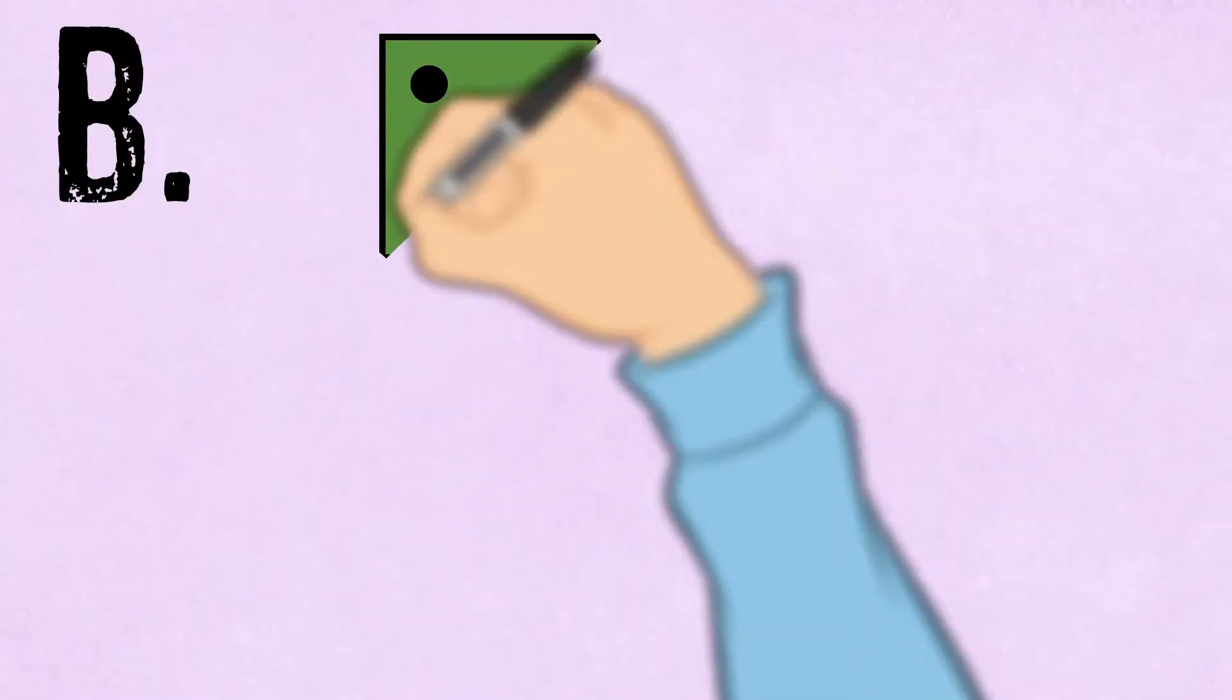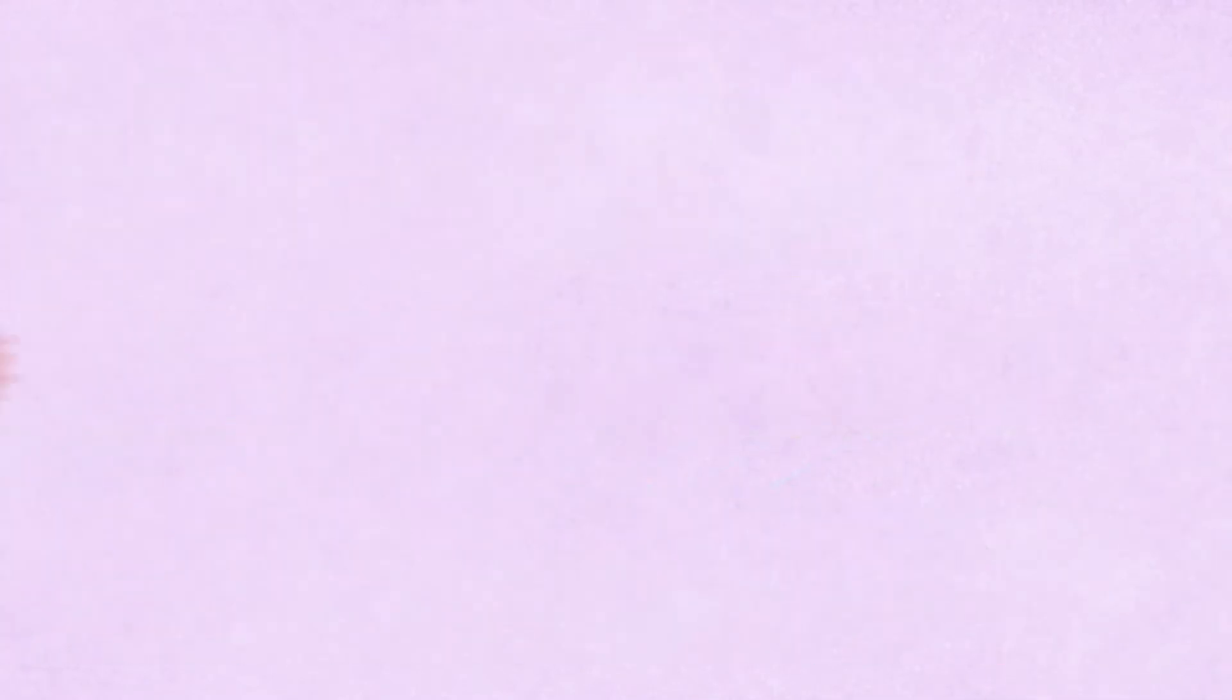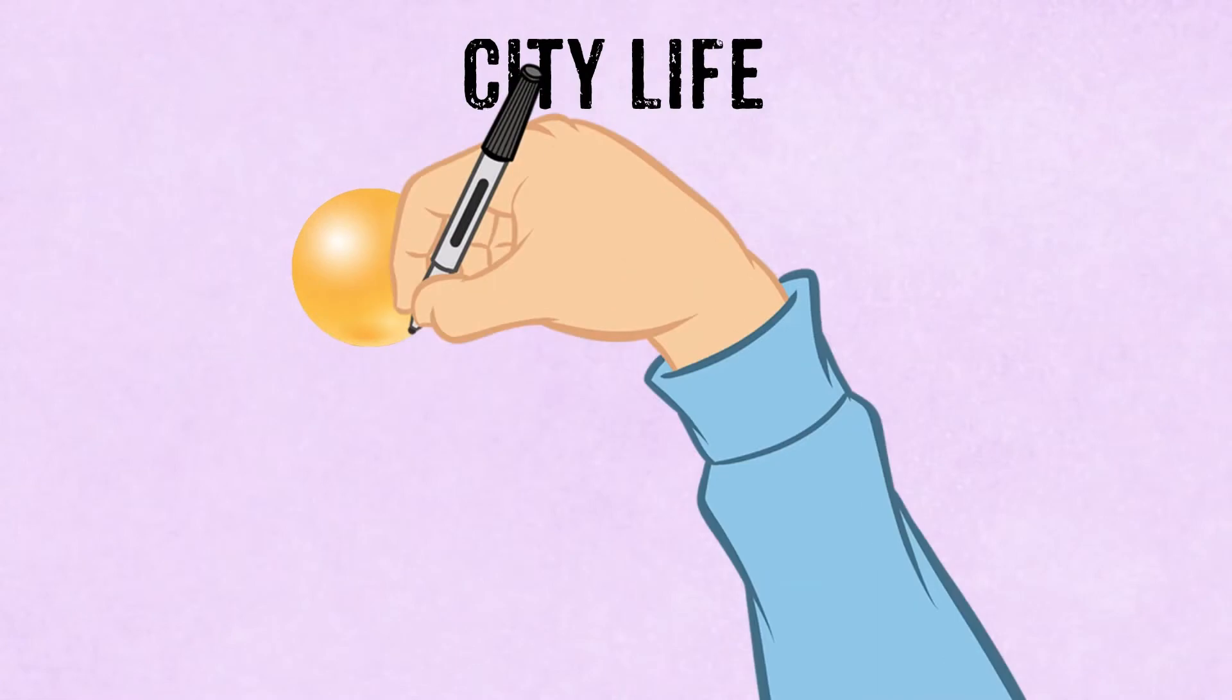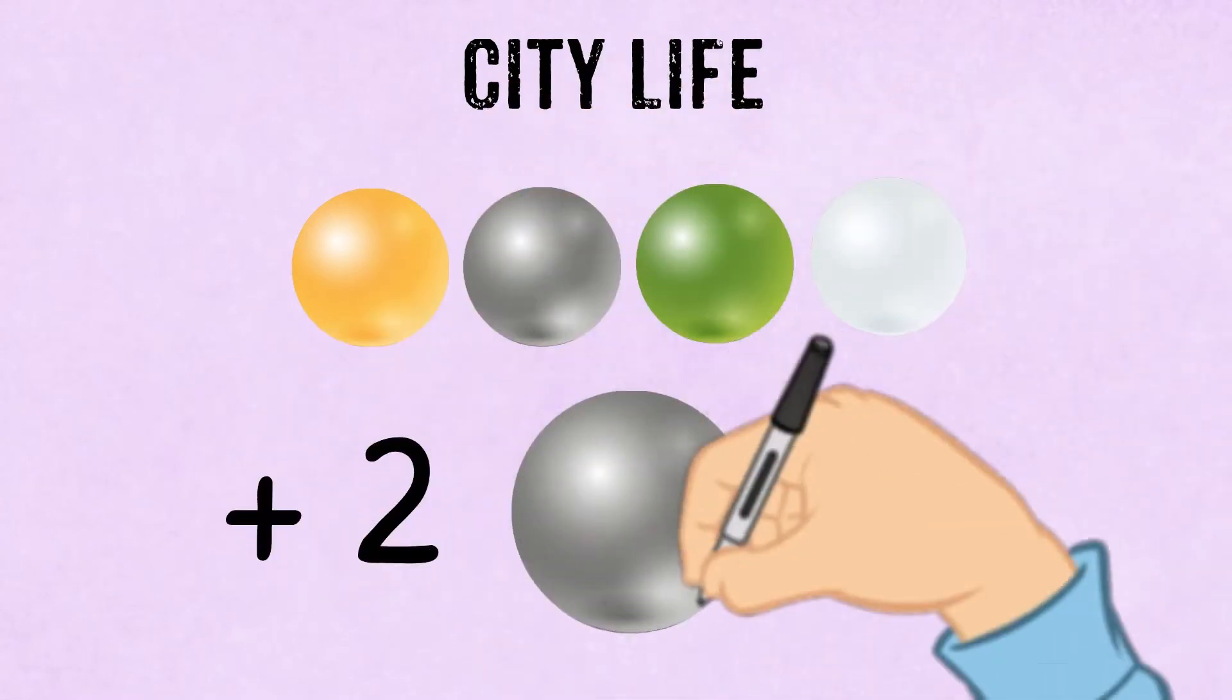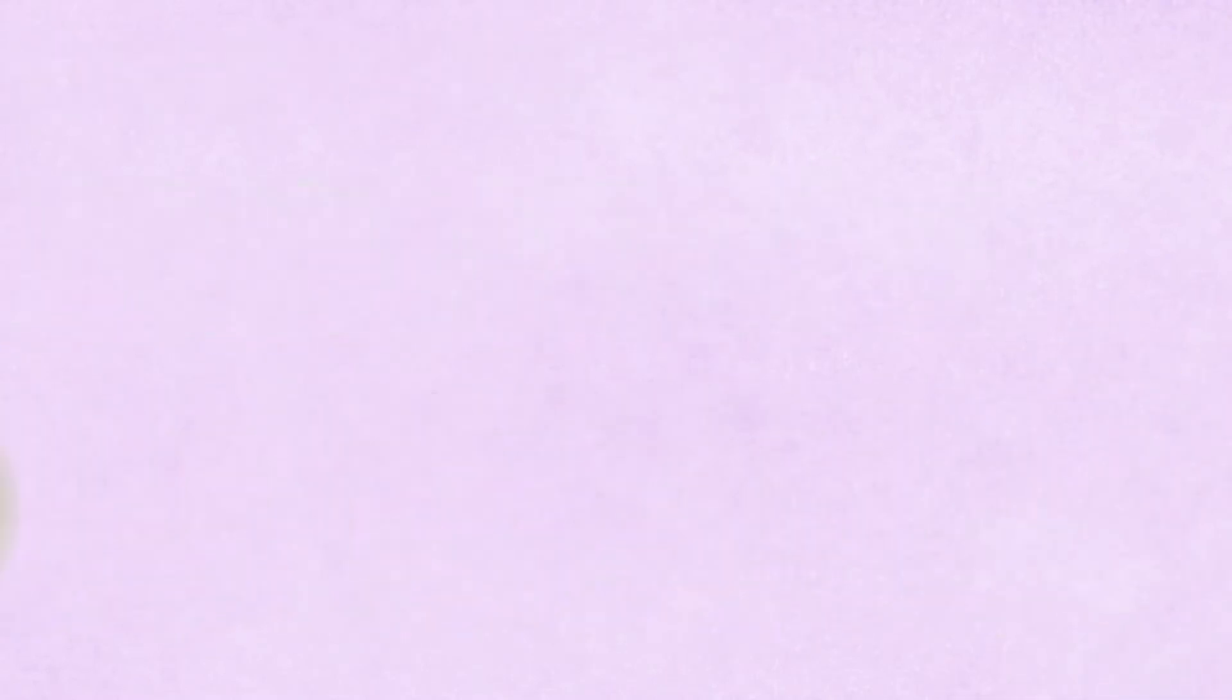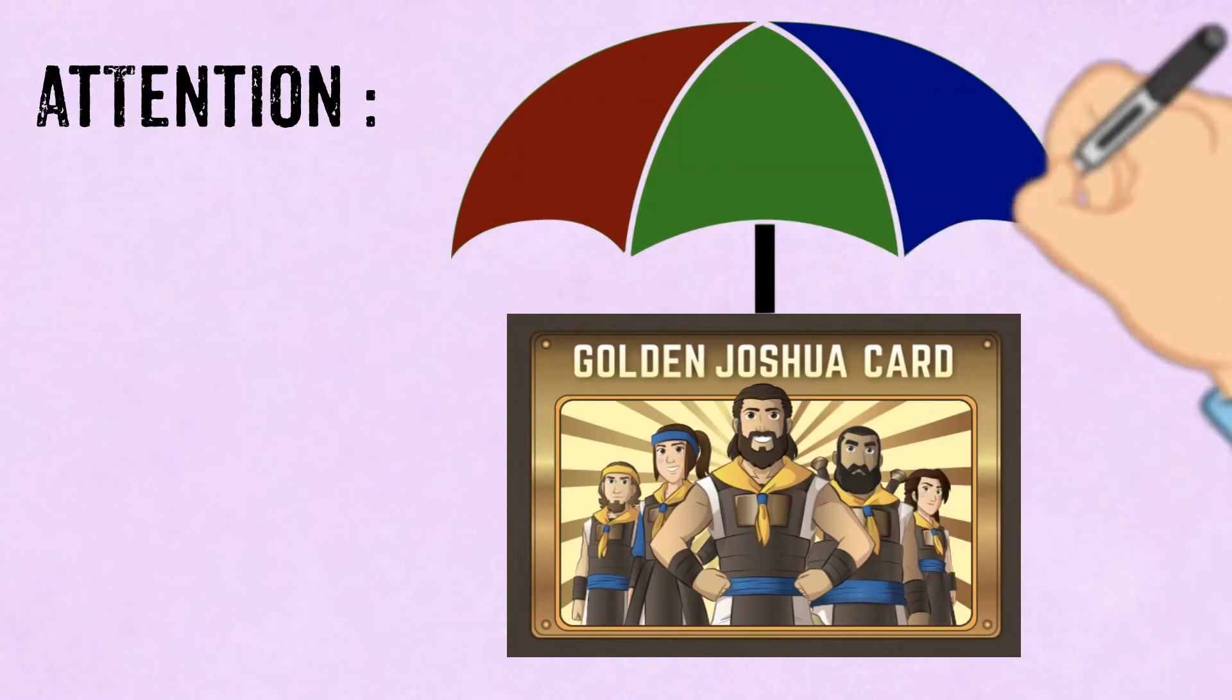If the two dice show the same number, doubles, the City Life activities will be infected. This means each activity will cost two more talents of any kind today. And attention again, because the Golden Joshua card activities of City Life cannot be infected.